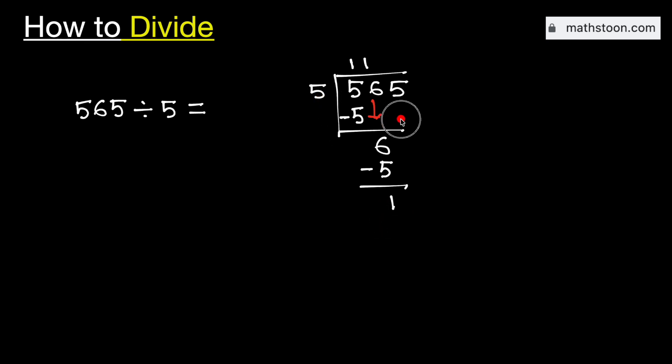That is why we need to bring down this adjacent 5 here. And we know that 5 times 3 is 15. Subtract, we get 0.